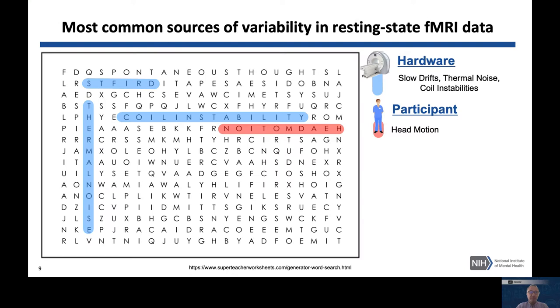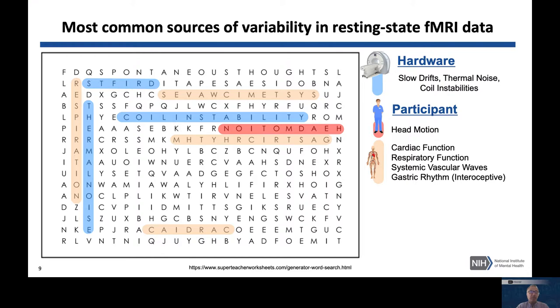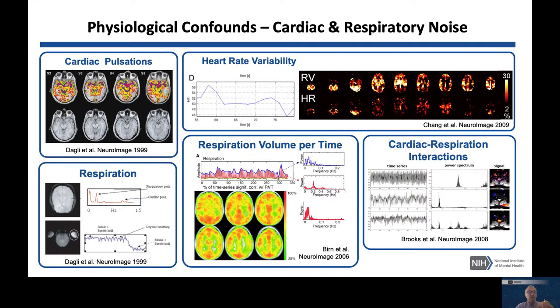The next big basket of sources is related to the physiology of the body — because when we scan our subjects, their head is still attached to their body, which is alive and doing many things, and we get echoes of those things in our fMRI signal. The most common physiological noise sources are cardiac pulsations, heart rate variability, and respiration volume per time. These vary by location within the brain and across subjects, because different subjects have different patterns of these noise sources.